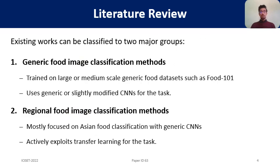Existing works can be classified into two major groups. The first group consists of generic food image classification methods, trained using large-scale generic food datasets, with networks mostly being popular CNNs such as VGG16 or their modified versions. The second group consists of regional food image classification methods, which are mostly focused on Asian food classification. Similar to the first group, they also use generic CNNs and actively exploit transfer learning for successful model training.